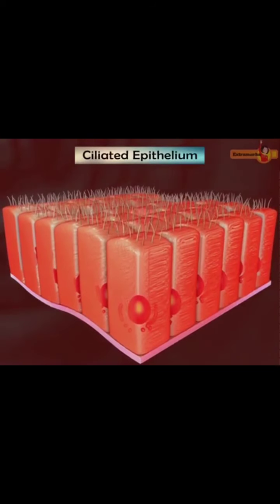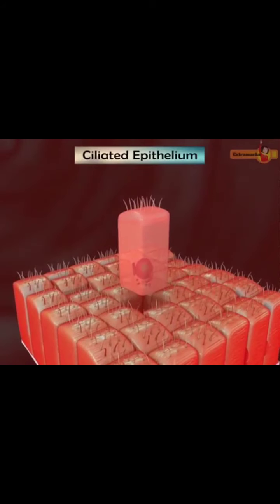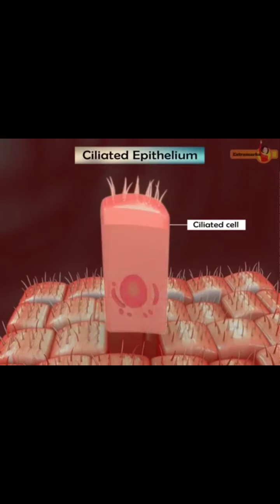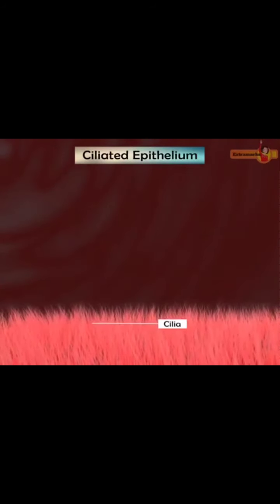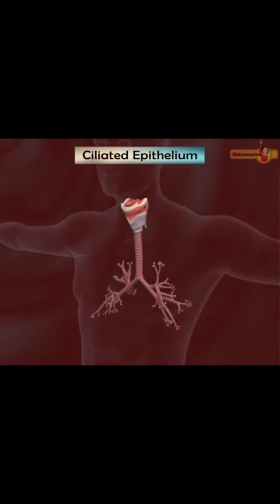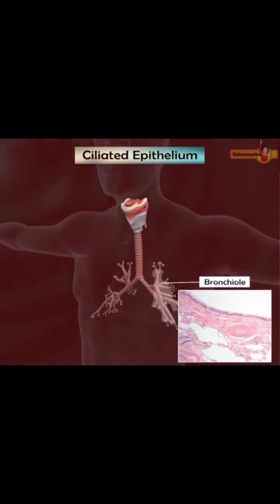When columnar and cuboidal epithelium bear cilia on their free surface, they are known as ciliated epithelium. Cilia are thread-like protoplasmic projections that help in the movement of particles or substances in a specific direction over the epithelium. Ciliated epithelium is located at the inner lining of the bronchioles. Hope you understood about epithelial tissue. Let us now discuss about the next animal tissue — connective tissues.